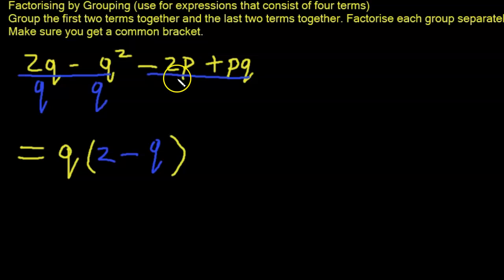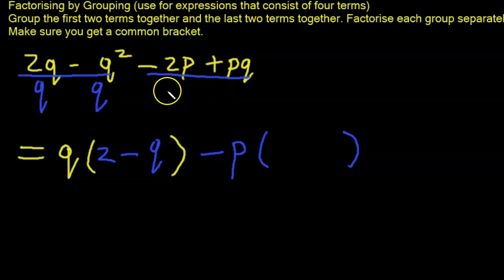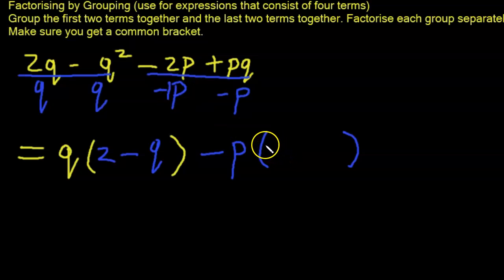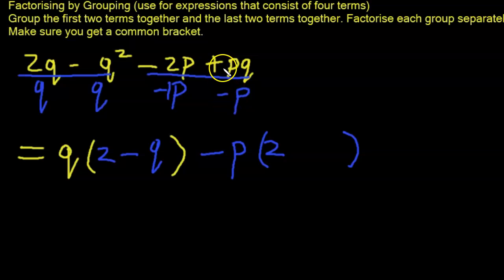For the other group, the common factor is p, but because the term begins with a negative number, we take out minus p. We divide both terms by minus p. Note that minus p means minus 1p, just as minus x means minus 1x. So minus 2 divided by minus 1 is positive 2, and p into p gives 1, leaving positive 2. For the other term, 1pq divided by negative 1p gives negative q. So the second group factors to minus p(2 minus q), and notice we now have a common bracket.